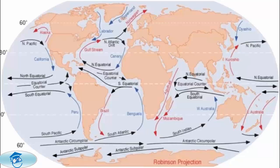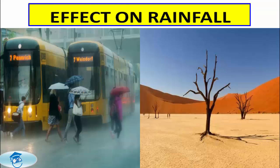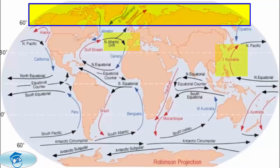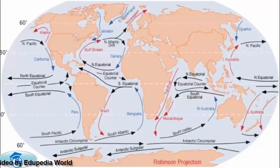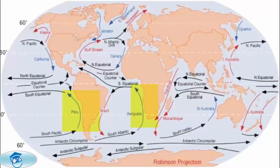Regarding the effect on rainfall: the air above warm ocean currents becomes warm and acquires greater capacity to absorb moisture, so the winds help increase the amount of precipitation in the affected coastal areas. For example, the North Atlantic Drift and the Kiroshio Current bring sufficient rainfall along the western coast of Europe and the eastern coast of Japan respectively. On the other hand, cold currents discourage rainfall — for example, the Kalahari Desert along the western coast of South Africa and the Atacama Desert along the western coast of South America owe their existence in part to the Benguela and Peru currents respectively.